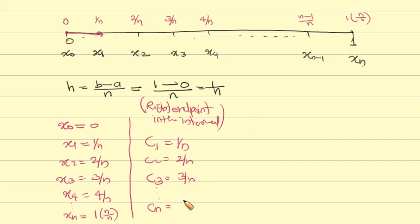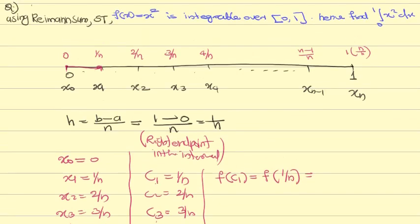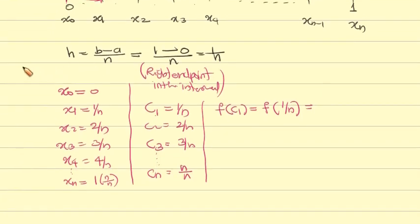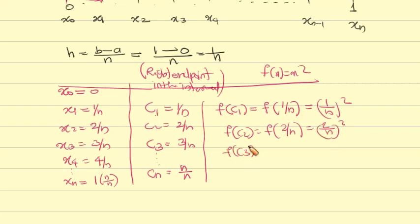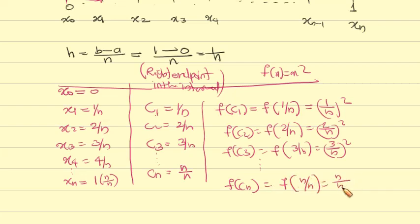The right-end points are used as sample points. Since f(x) = x², we get: f(c₁) = f(1/n) = (1/n)², f(c₂) = f(2/n) = (2/n)², f(c₃) = f(3/n) = (3/n)², and f(cₙ) = f(n/n) = (n/n)².